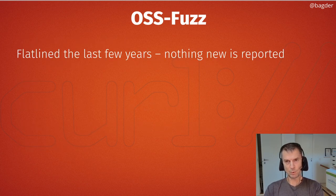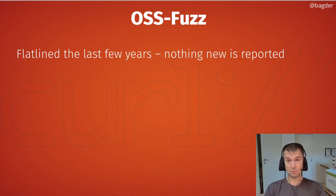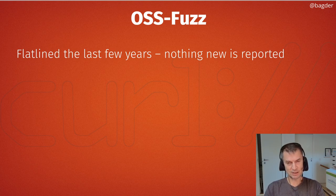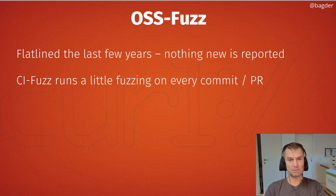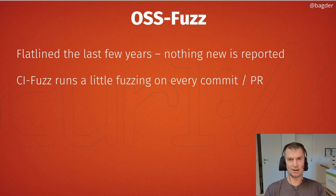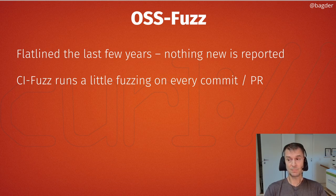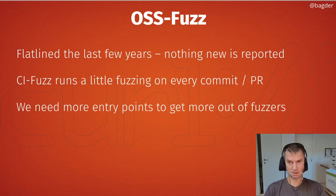We've been part of OSS-Fuzz for about five years, and it has really flatlined recently — partly because we fixed a lot of issues initially reported, but mostly due to limitations in our fuzzing integration. There's room for improvement there. We also run a CI fuzz system that runs a little bit of OSS-Fuzz for about 40 minutes on every commit and PR, which is a really good way to detect really stupid things.